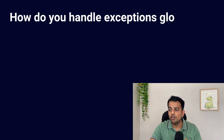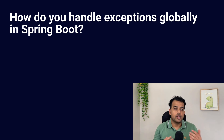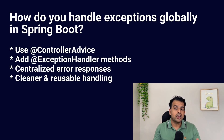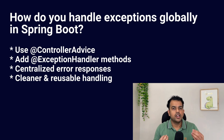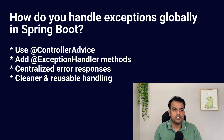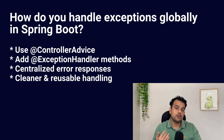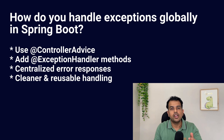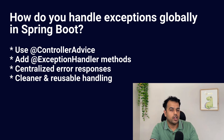How do you handle exceptions globally in Spring Boot? We generally use the @ControllerAdvice annotation. We create a class annotated with @ControllerAdvice, and inside it create multiple methods, each annotated with @ExceptionHandler. Each method handles a specific exception and returns a clean JSON response instead of raw errors. You can create custom exceptions and handle them this way, which is more convenient than writing try-catch blocks throughout the project.